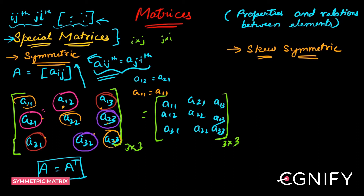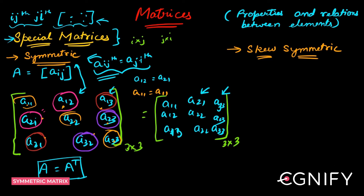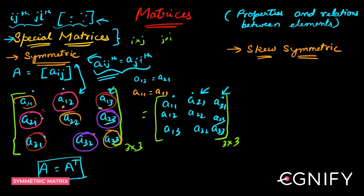Now, if A12 and A21 are the same, then those elements in the transposed matrix will be the same. Correcting the labeling: after transposing, this position holds A13 and that holds A31. If these two are equal, then A13 will also equal A31 in the transposed matrix. So every corresponding element becomes equal, and since this is your transposed matrix, that is the reason why A equals A transpose if your matrix is a symmetric matrix.